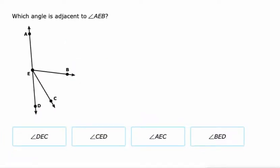Adjacent angles have the common vertex and a common side. So AEB. AEB is this angle right here. So which one is adjacent to that? DEC? DEC. Well, they have a common vertex right there, but not a common side. What about CED? CED. Well, that's the same one. It's DEC. So no.